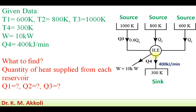The net work output from the heat engine is W = 10 kW. The quantity Q4 represents the heat rejected to the sink at 300 Kelvin, and that value is given as 400 kJ per minute.